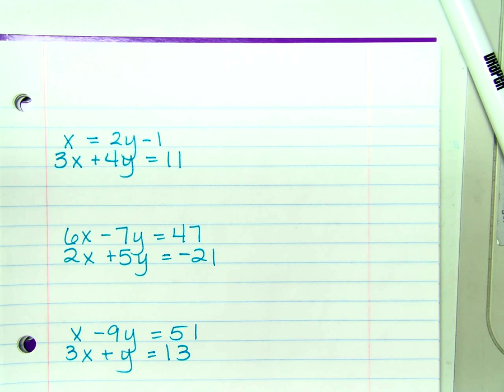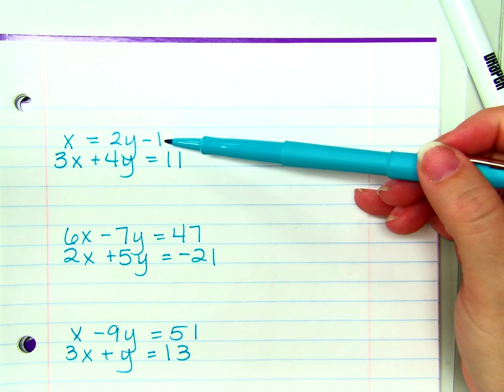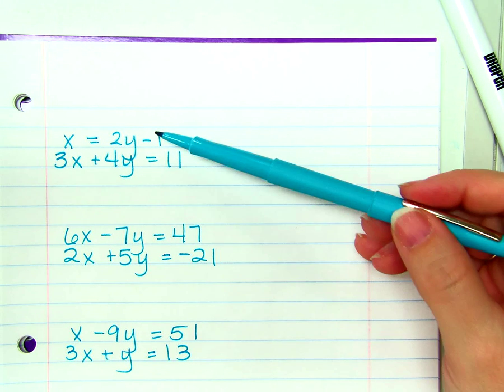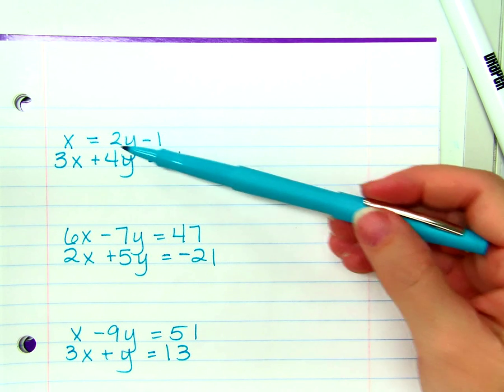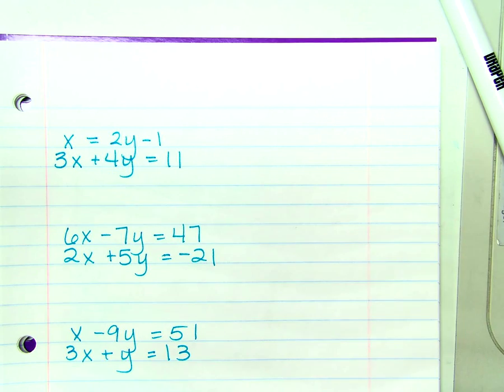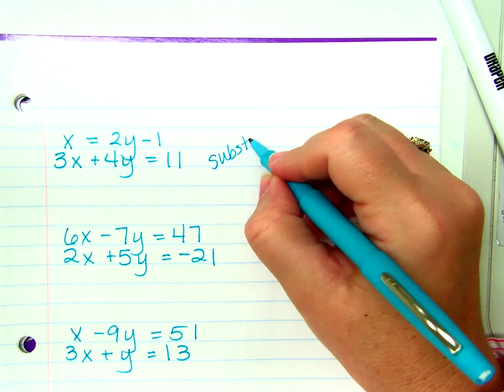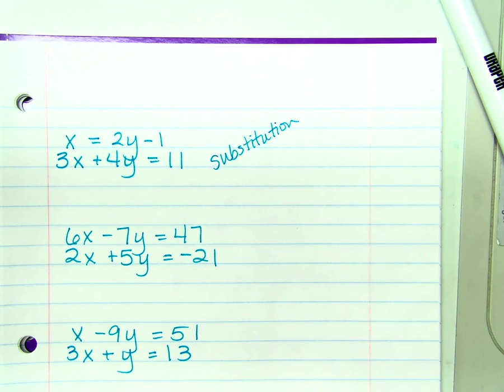So, my other two options are elimination and substitution. Since this first equation is already set equal to x, it would be very simple to substitute what I know for x into the second equation. So, I would probably do this one with substitution.